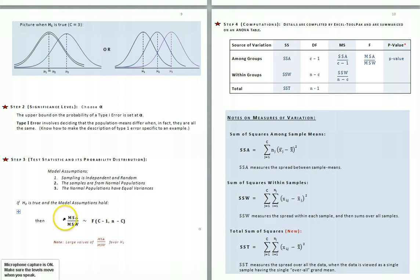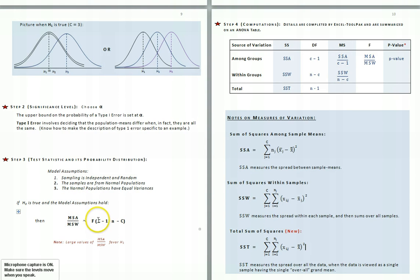When MSA is bigger than MSW, that's evidence in favor of the statement that the population means are different. If the model assumptions hold, then MSA over MSW has an F distribution with the number of populations minus 1 degrees of freedom for the numerator, and the total number of observations in all samples minus the number of samples degrees of freedom for the denominator.